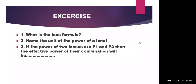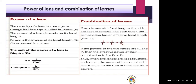A student asks for clarification on the combination of lenses. If two lenses — for example, two convex lenses — are placed together, each lens will have its own focal length: F1 for lens 1 and F2 for lens 2.